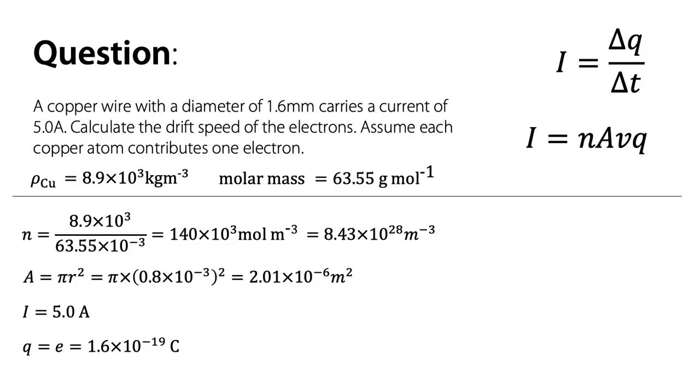But for the drift velocity calculation, the negative sign doesn't make any sense. So there you go. We now have n, A, I, and q, so we can calculate v, drift velocity. Drift speed. Rearranging is I divided by nAq.